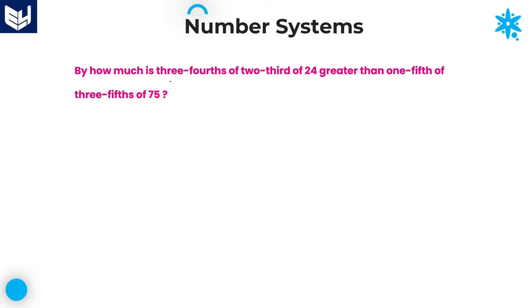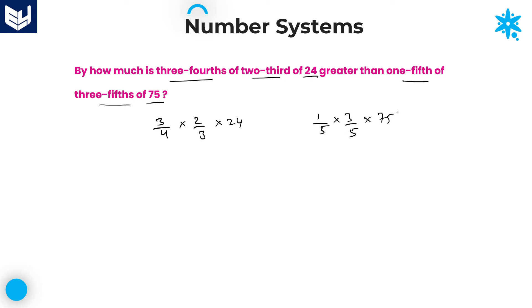Next question: how much is 3/4 of 2/3 of 24 greater than 1/5 of 3/5 of 75? Calculate each value separately. For 3/4 of 2/3 of 24: the 3s cancel, leaving 4 once; then 24 divided by 4 is 6, and 2 times 6 is 12. The first answer is 12.